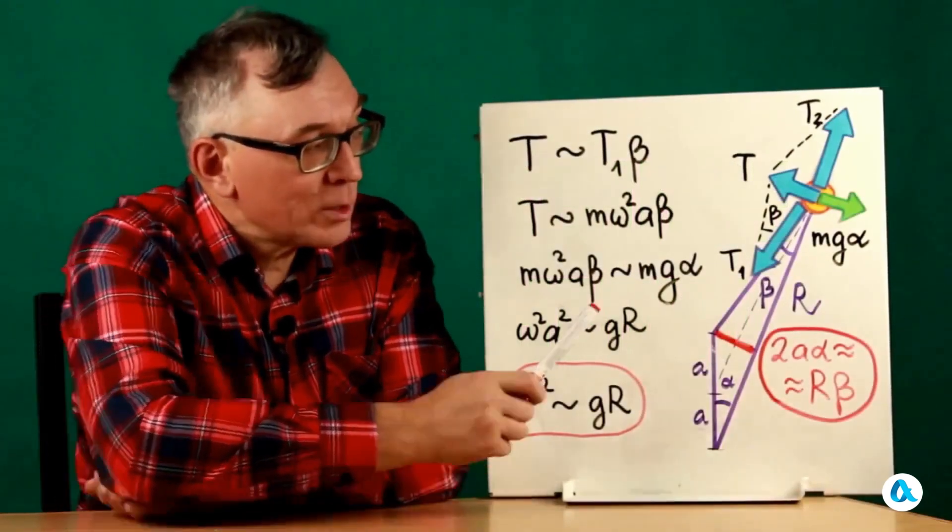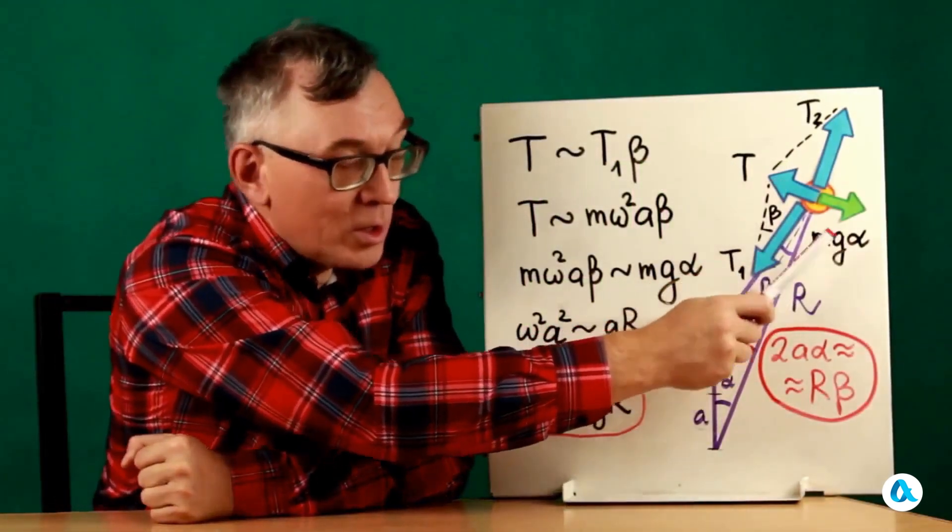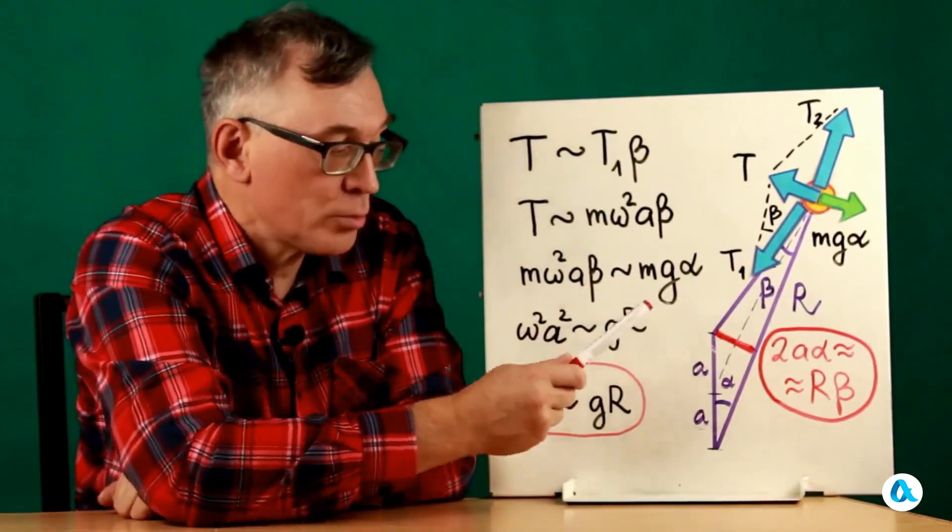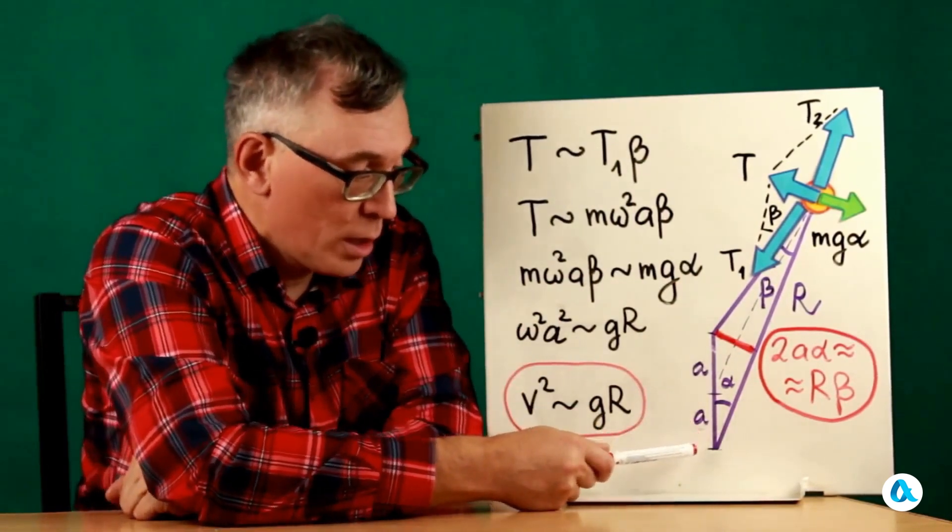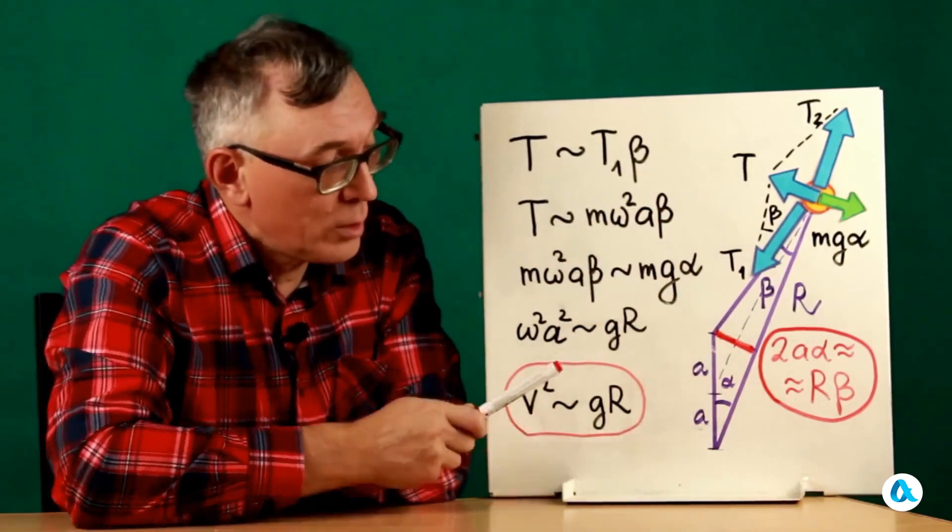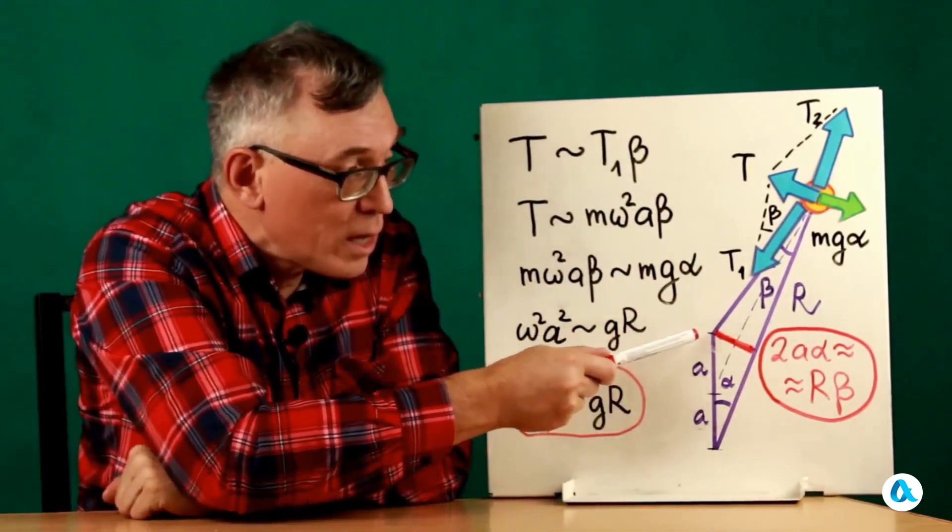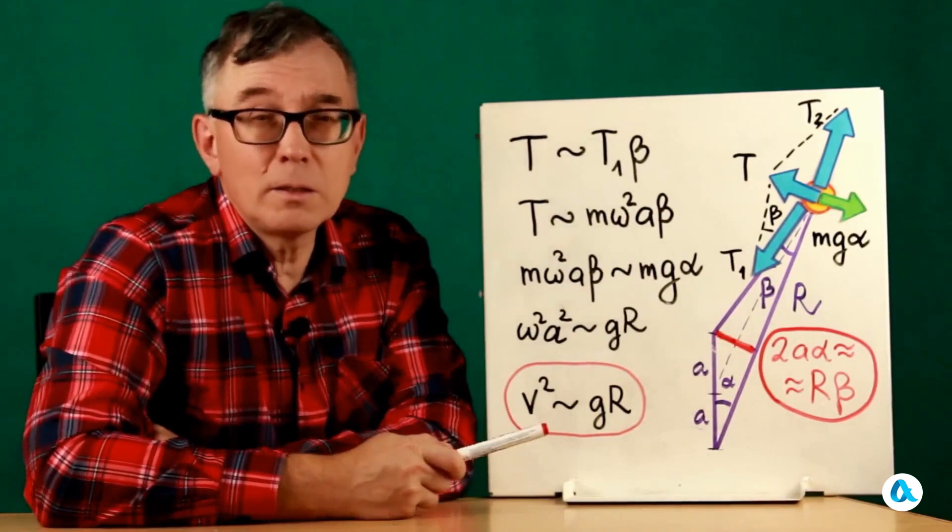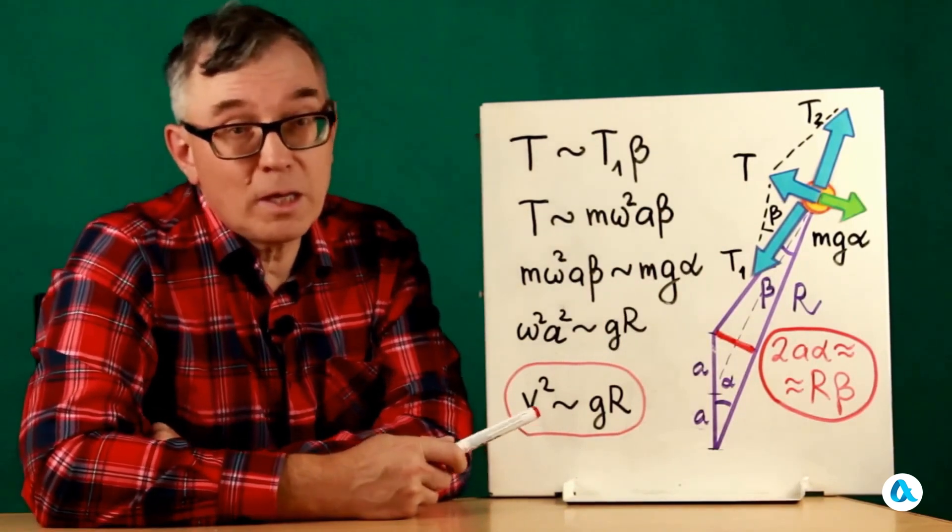The deviation force mg times α acts on the pendulum at small-angle approximations. What opposes it? When the piston passes the lowest point, it pushes the pendulum up with force T2. And when the piston passes the highest point, it pulls the pendulum down with force T1.